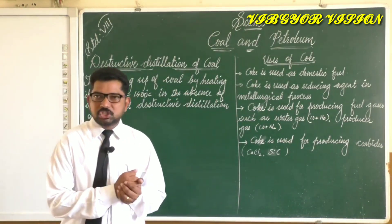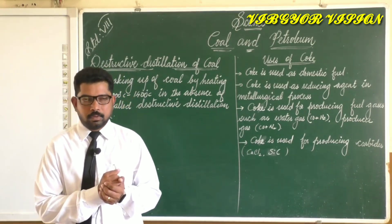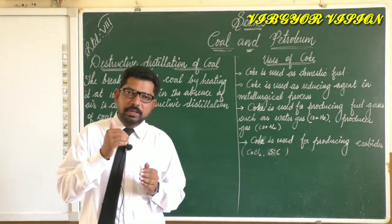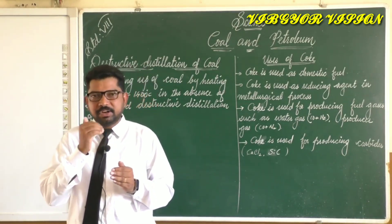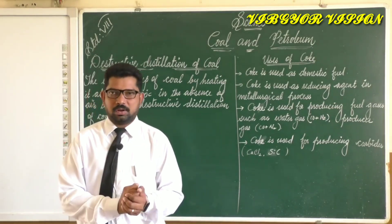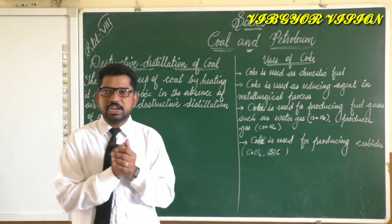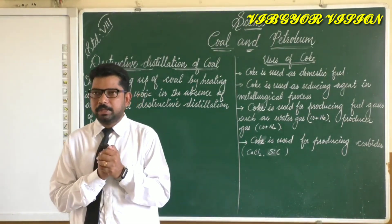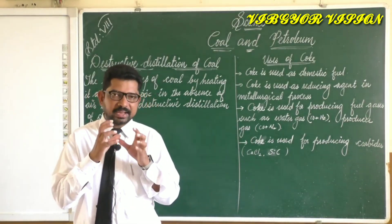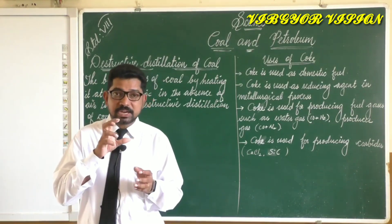A black colored tarry material obtained during the destructive distillation of coal is called coal tar. It is a highly viscous liquid — like honey or even thicker than honey.